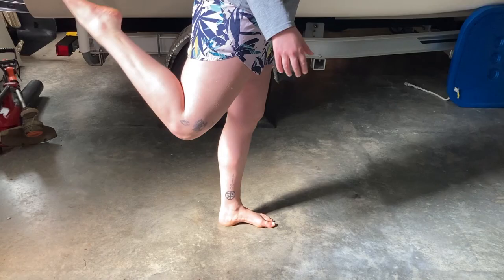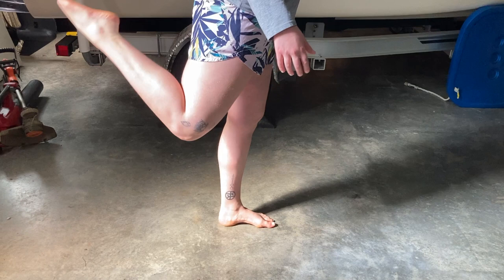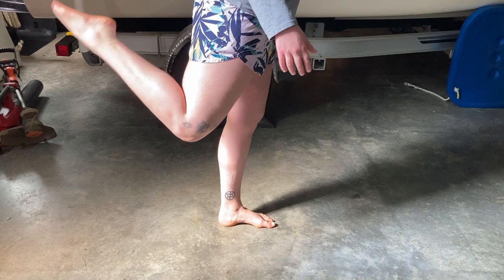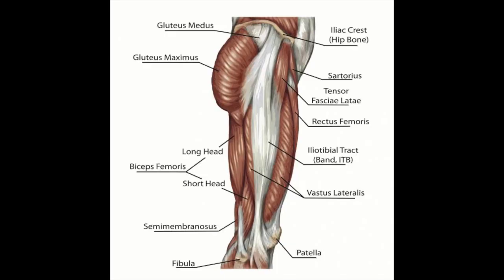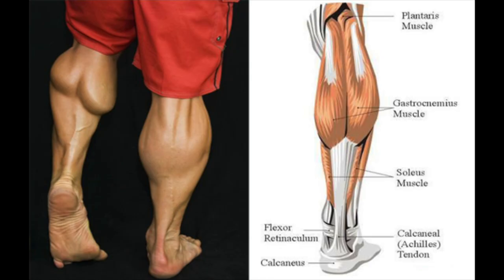Simultaneously, as the hip is extending, the knee is also going into flexion. This is triggered by the hamstrings as well as the popliteal. The TFL and the quadriceps are again antagonizing this motion. The gastrocnemius of the calf region is supporting knee flexion as a synergist.